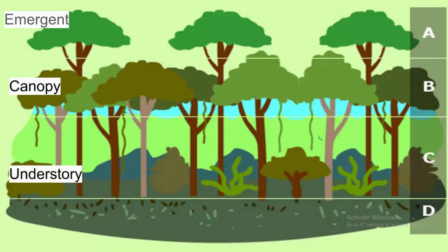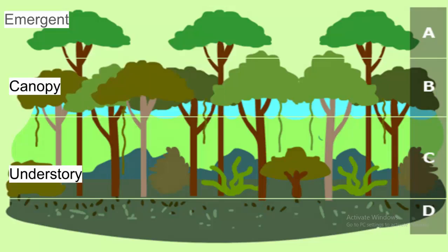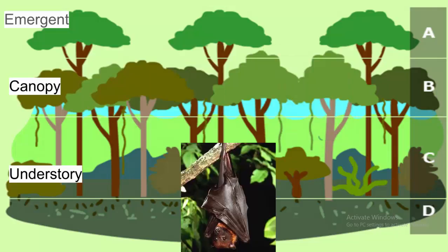The understory is made up of the trunks of canopy trees, shrubs, plants, and small trees. It's constantly shady and has high humidity. This layer includes animals like lizards, beetles, and bats.